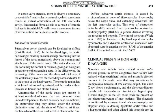Diffuse subvalvular aortic stenosis is caused by a circumferential zone of fibromuscular hypertrophy below the aortic valve, extending downward into the left ventricular cavity. This type of obstruction is to be differentiated from hypertrophic obstructive cardiomyopathy, a genetic disease involving the myosins and troponin. The clinical spectrum is characterized by basal septal ventricular hypertrophy and the dynamic obstruction associated with abnormal systolic anterior motion of the anterior leaflet of the mitral valve into the left ventricular outflow tract.